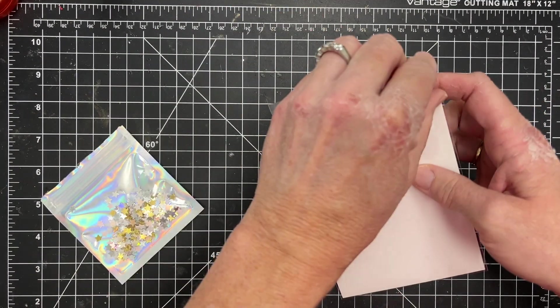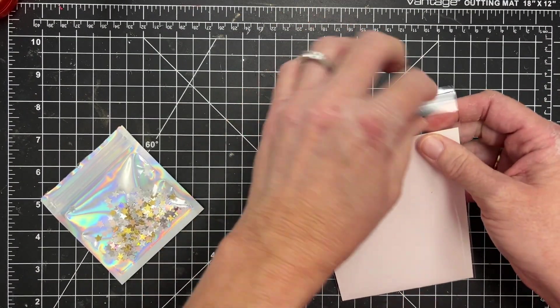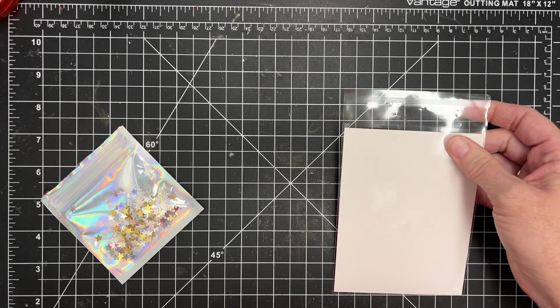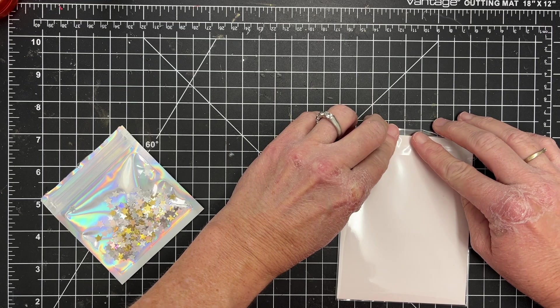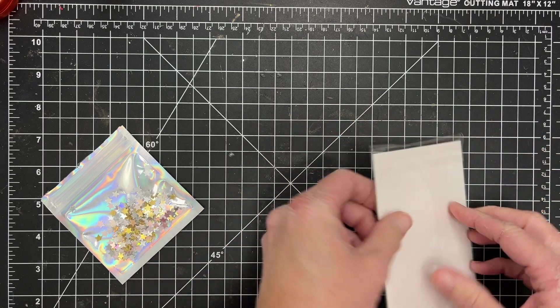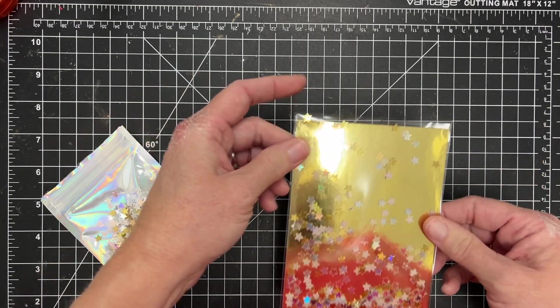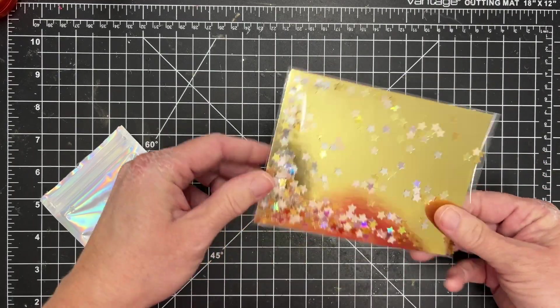So anyway, I thought that would be a perfect choice to coordinate with the gold stars, but then be a nice contrast with the iridescent ones. So I'm going to close up my shaker pouch here and I have some great shaking going on.